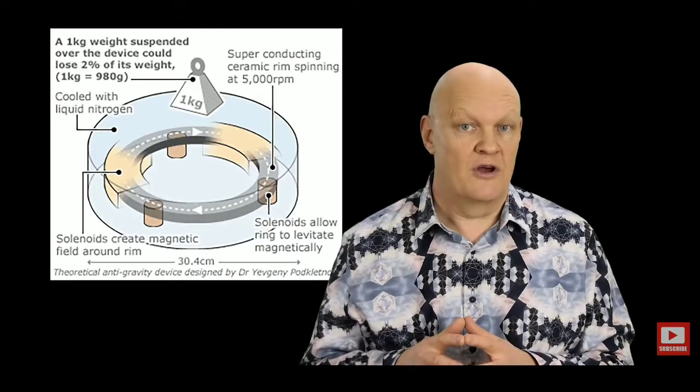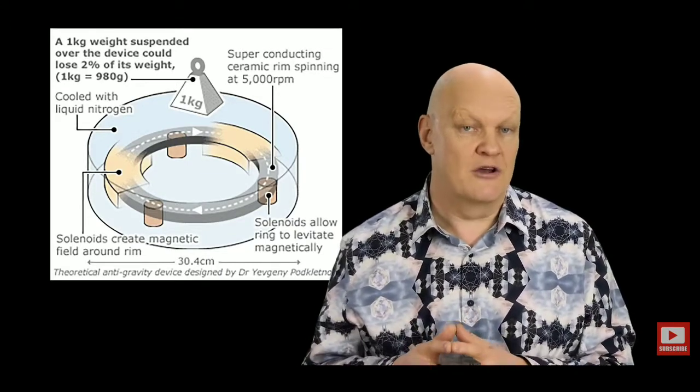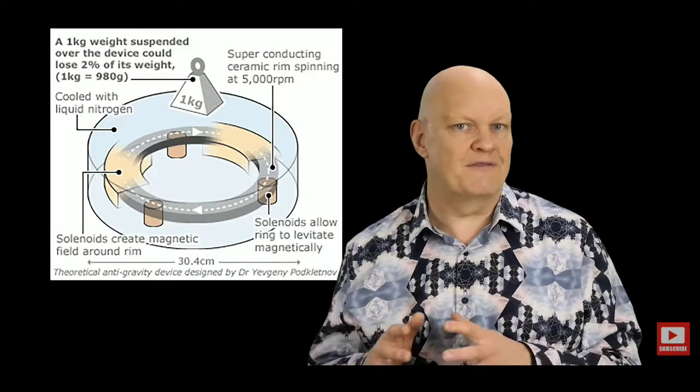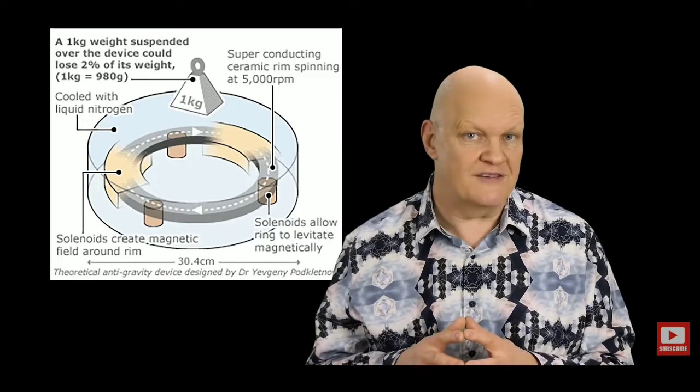Experiments carried out by Yevgeny Podkletnov in the early 1990s using rotating superconducting disks in a magnetic field claimed to decrease the effect of gravity by about 2% on objects placed above the disk, and again it appeared to act like a beam above the disk for a considerable distance. However these results had not been able to be verified by other scientists.